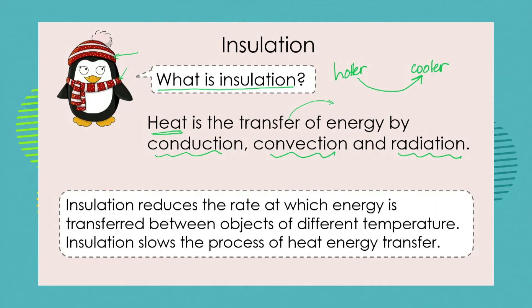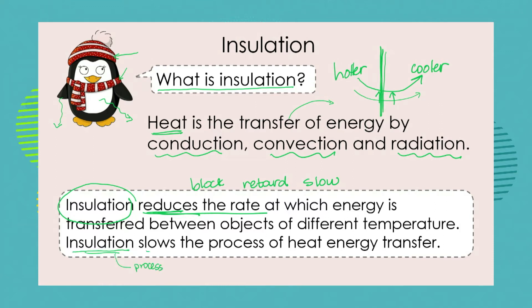The important thing is that heat energy moves from a hotter object or substance to a cooler object or substance. So if it is cold outside, our penguin is going to lose heat energy from his body to the outside. Insulation reduces the rate at which that energy transfer happens — it blocks, reduces, retards, and slows that rate of energy transfer. Heat energy wants to transfer from hotter to colder, and insulation blocks that transfer.